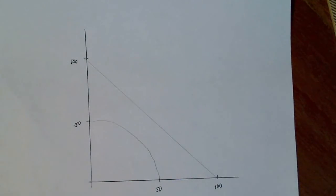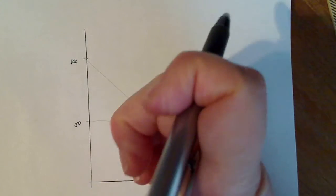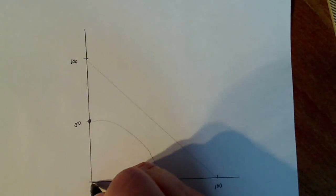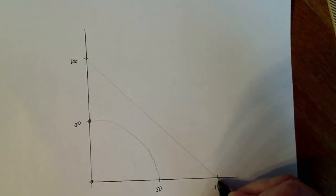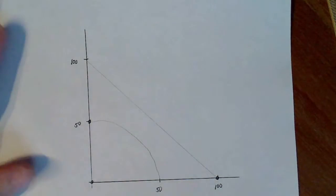Now I want to mark my equilibrium points. There is an equilibrium point, equilibrium point at the origin and then at (100,0). So this is according to this,